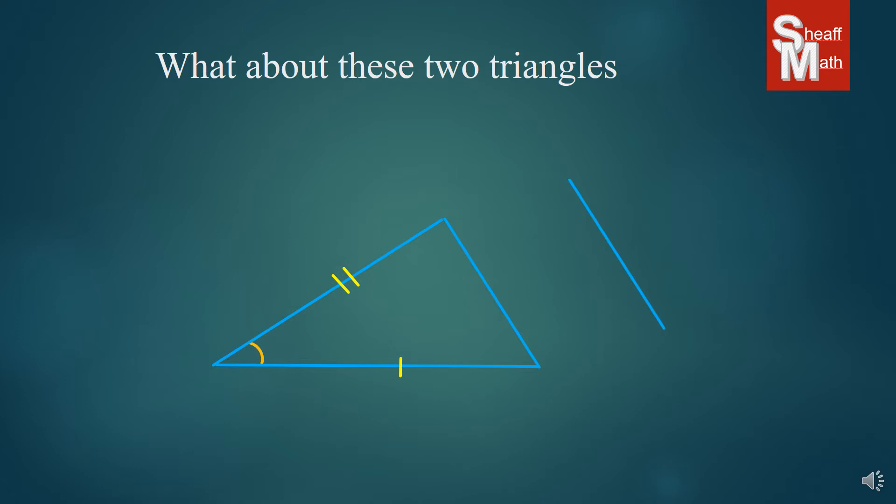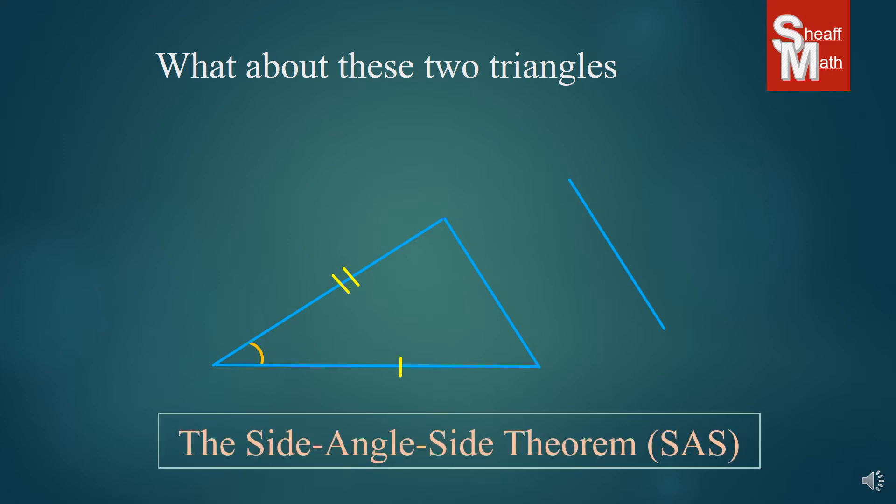And the only side that will fit there is that original side. And so, this is enough information to prove that two triangles are congruent. We call it the side-angle-side theorem, SAS.